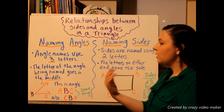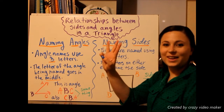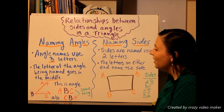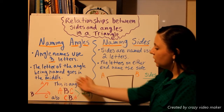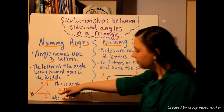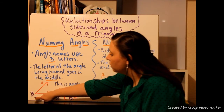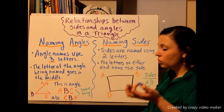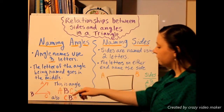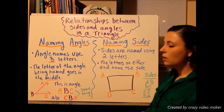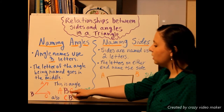For naming angles, you're going to name them using three letters. The letter of the angle being named goes in the middle. So for example, we have an angle here with three letters. The one that's in the middle is the angle that you're trying to name. So we would call this angle ABC. Whatever letter is on the point of the angle goes in the middle.